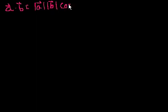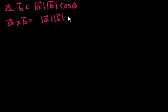Let me give you the definition that I've given you already. a dot b, the dot product, is the magnitude of a times the magnitude of b times cosine of the angle between them. a cross b is equal to the magnitude of a times the magnitude of b times sine of the angle between them, times the normal vector that's perpendicular to both of them, the normal unit vector.